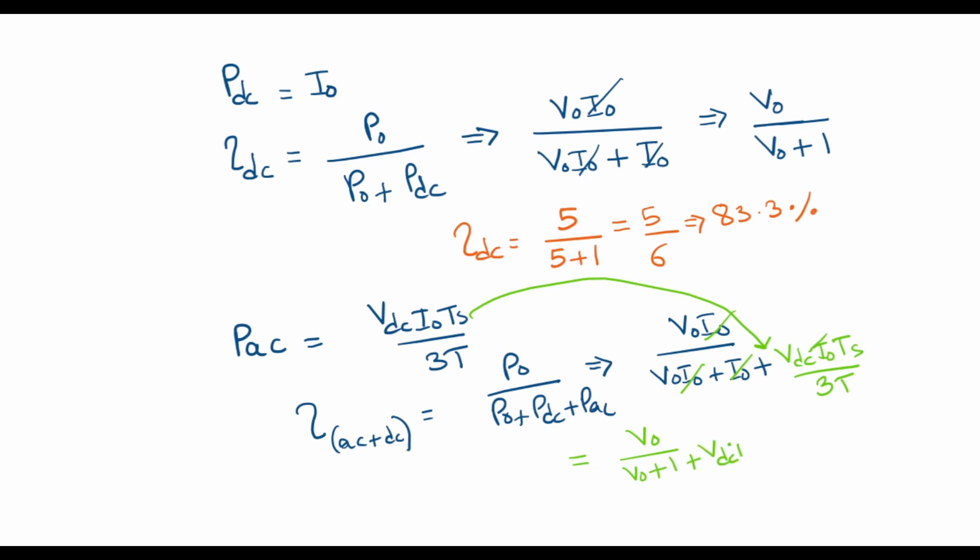plus VDC times TS divided by 3T. So let's look at the expression for the total efficiency once again. This equals V0 divided by V0 plus 1 plus VDC times TS divided by 3T.